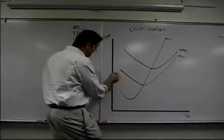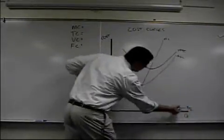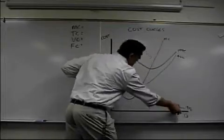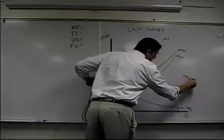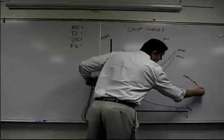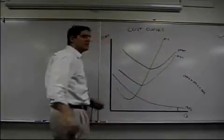The reason why is because of this. This is average fixed cost. This quantity right here, that quantity is the same as that. AFC plus AVC equals ATC. So this plus this is going to be your ATC. That's what you got.